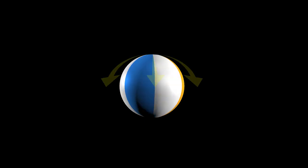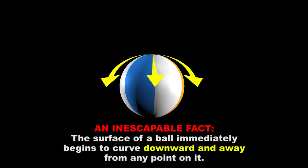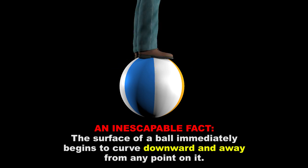The lines of the ball clearly point out what so many in the ball earth camp are blatantly ignoring. A ball, by its very nature, demands that its surface immediately begins to curve downward and away from any point on it. Immediately, the ball is curving downward and away from his feet in all directions. That's what a ball does.